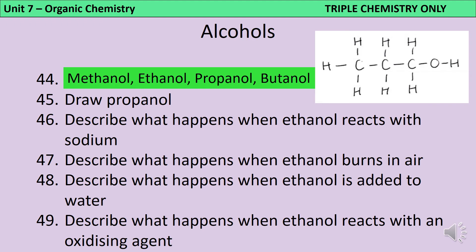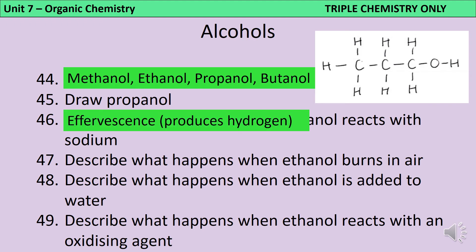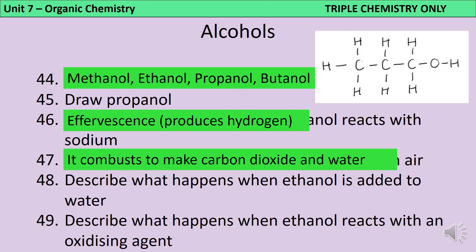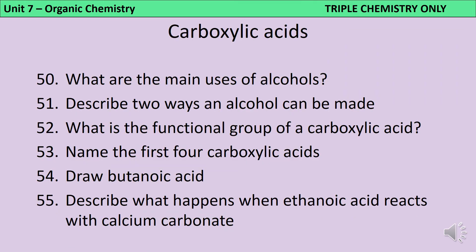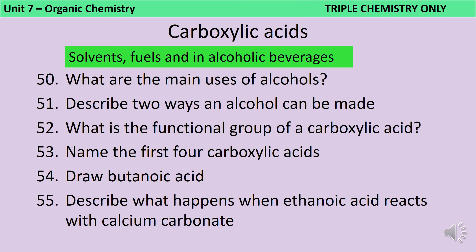When ethanol reacts with sodium it will fizz — effervescence — because hydrogen gas is released. When an alcohol burns in air it produces carbon dioxide and water, and when an alcohol is added to water it dissolves to produce a neutral solution. When alcohols react with oxidizing agents like potassium permanganate they produce carboxylic acids. Main uses of alcohols are as solvents, fuels and in alcoholic beverages. Alcohol can be made either by fermentation using yeast in warm, wet, anaerobic conditions, or by the hydration of an alkene.